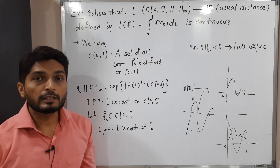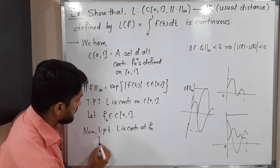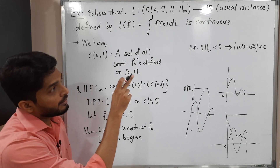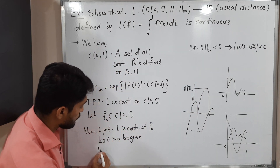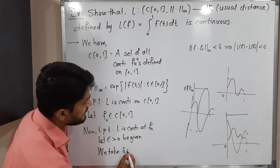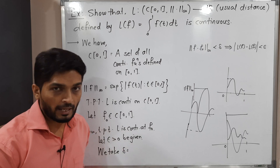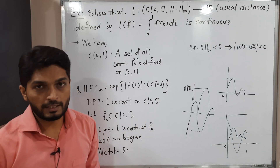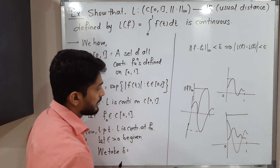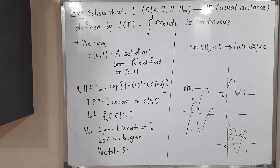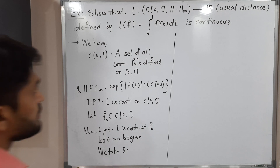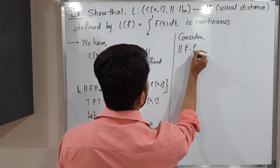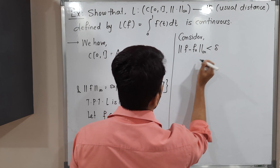We need to choose ε first. Let ε > 0 be given, and for this ε we need to find a δ that gives us the required condition. We will take δ = — but right now we don't know what δ should be, so we keep it blank. We will go further and at the end we will realize what δ should be. Now, going directly with the definition: consider the domain with norm infinity, so ‖f − f₀‖∞ < δ implies...